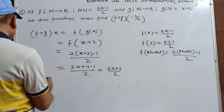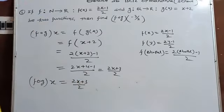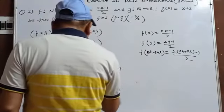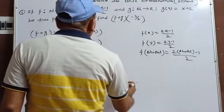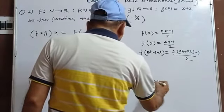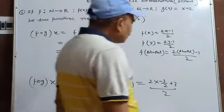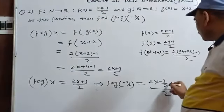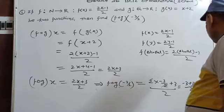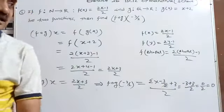Now fog(-3/2) = (2×(-3/2)+3)/2 = (-3+3)/2 = 0/2 = 0. So the answer is 0.